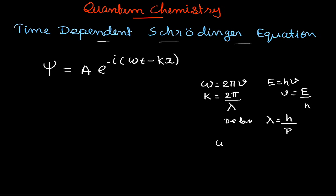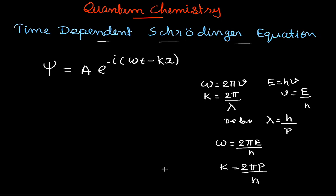Substituting, we get: omega = 2π·E/h, and k = 2π·p/h. These are the two values of omega and k respectively, which we will now substitute into our wave function expression.